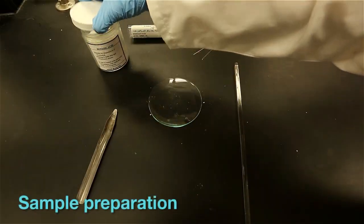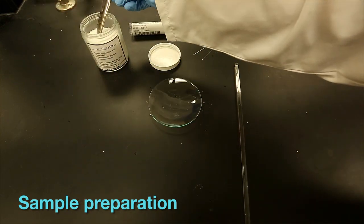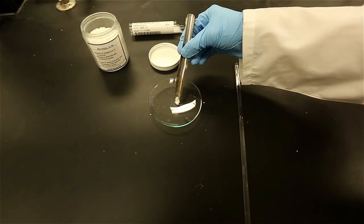To prepare your compound for melting point analysis, you must first powder the compound on a watch glass with a stirring rod or a mortar and pestle.